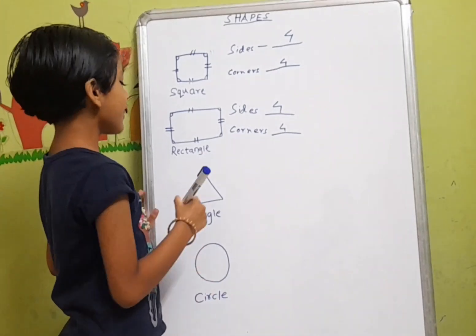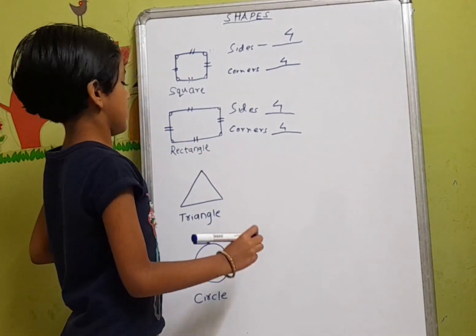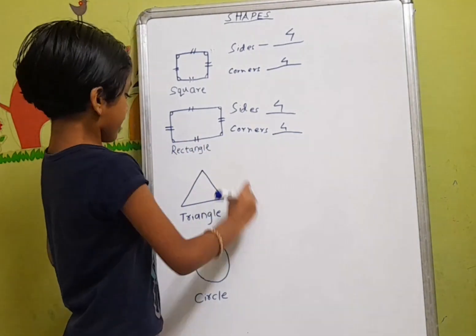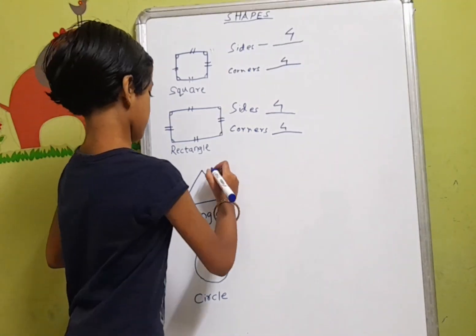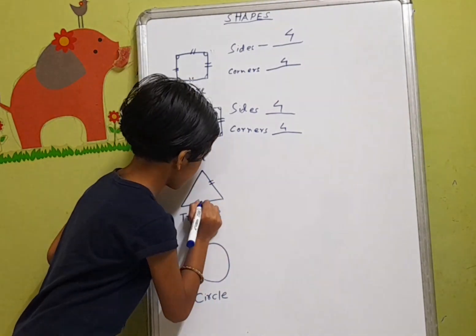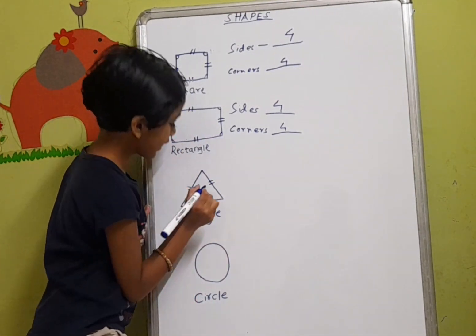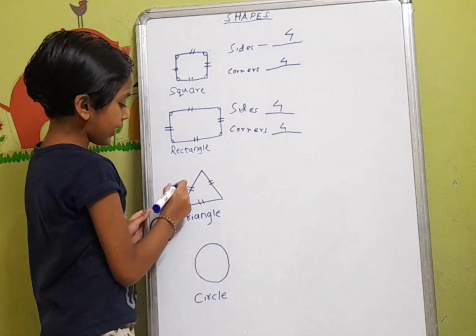Next one: triangle. This is a triangle. Now let's count: one, two, three. There are three sides in a triangle.